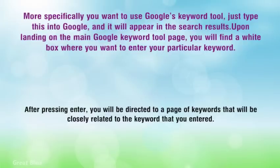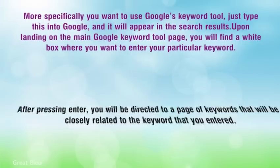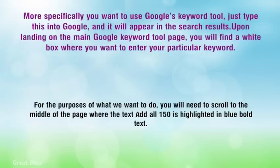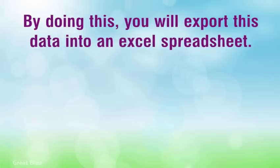After pressing Enter, you will be directed to a page of keywords that will be closely related to the keyword that you entered. You will need to scroll to the middle of the page where the text 'add all 150' is highlighted in blue bold text. By doing this, you will export this data into an Excel spreadsheet.